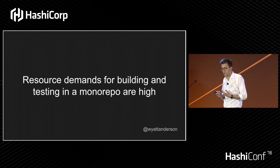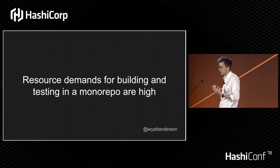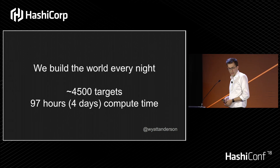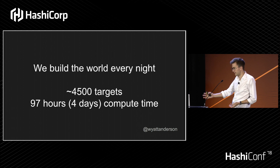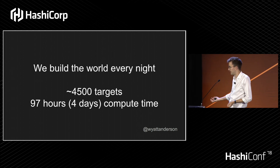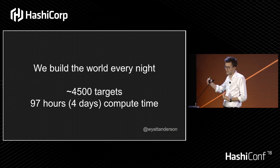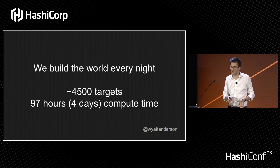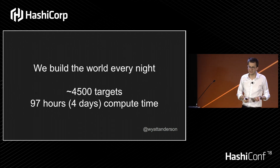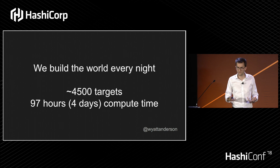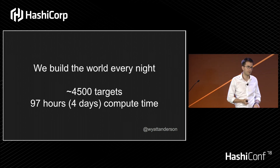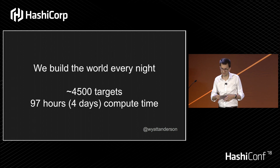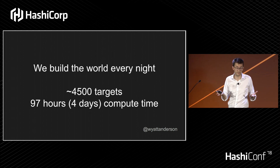The resource demands for building and testing in a monorepo are somewhat high. We build the world every night — that means we build every buildable target in our code base: binaries, applications, and code we might actually deploy. We also run every test every night. That's about 4,500 targets. It takes about 97 hours of compute time — about four days. We do that in about 45 minutes of wall clock time. We could probably speed that up, but 45 minutes is a lot better than four days.